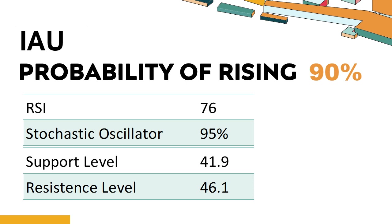The probability of IAU share price rising is 90%. When the probability of rising is higher than 50%, it means that the stock has a higher chance of rising. If the probability of rising is lower than 50%, it means that the probability of falling is high. Combining multiple technical analysis indicators, IAU has four bullish signals and three bearish signals.